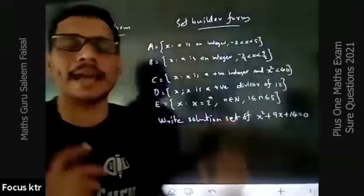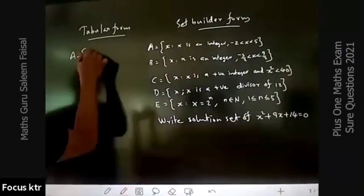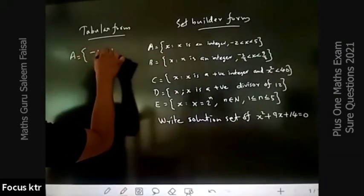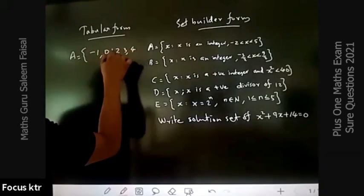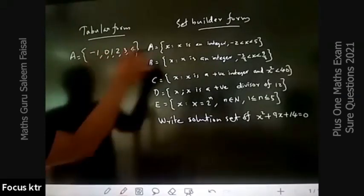Minus 2, which is not included. Then minus 1, 0, 1, 2, 3, 4. 5 is not included either. These are the numbers in tabular form.